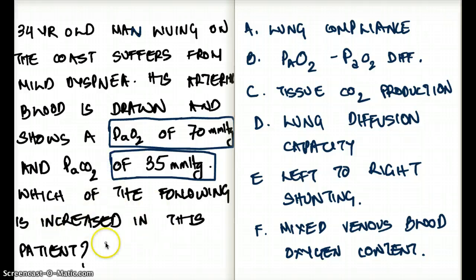Which of the following is increased in this patient? Is it lung compliance, PaO2 minus P alveolar O2 difference, tissue carbon dioxide production, lung diffusion capacity, left to right shunting, or mixed venous blood oxygen content?